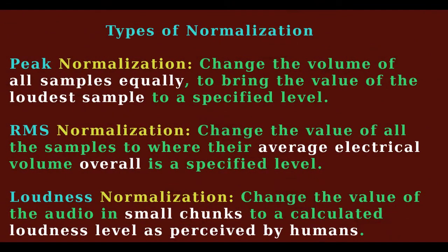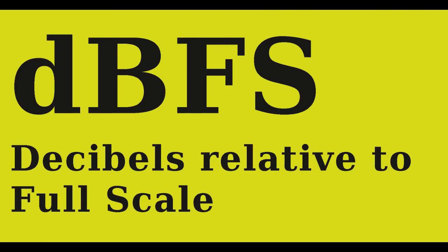There are three types of normalization. Peak normalization changes the volume of all samples equally to bring the value of the loudest sample to a specified level. The loudness value is measured in dB below full scale, or dBFS.